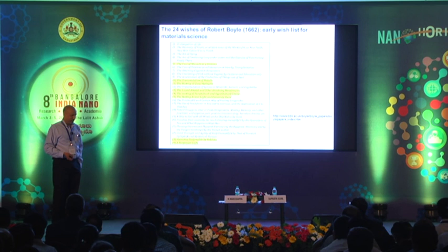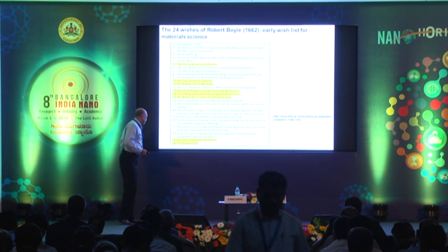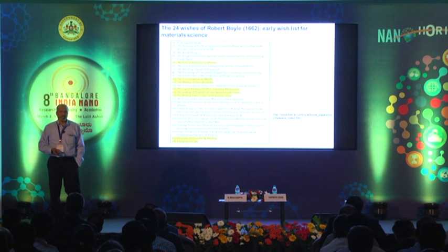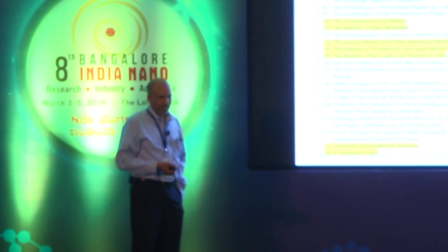Now, if you had a universal solvent, there would be nothing to store it in because it would dissolve the container — so that's a little bit of a problem. A perpetual light at the bottom — I think with solid state lighting, that has arrived today. But of all this list of 24 items, there's one item that is missing. Can someone point out what that is?